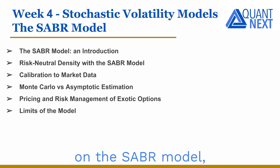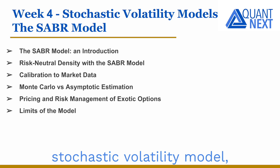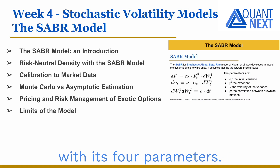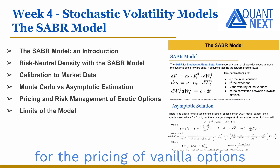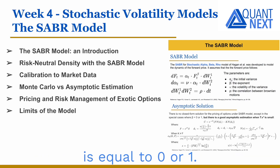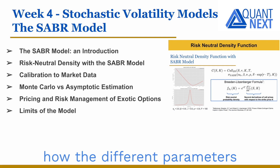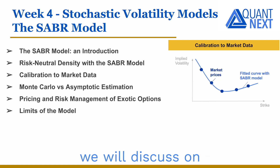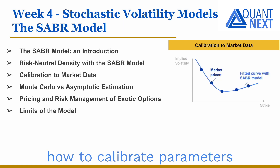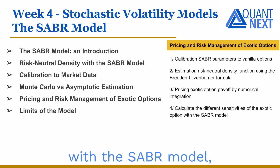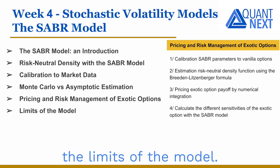The fourth week will be on the SABR model, another popular stochastic volatility model particularly on interest rates. We will introduce the model with its four parameters. There is no closed form solution for the pricing of vanilla options under the SABR model, except when the parameter beta is equal to zero or one, but there is a good asymptotic estimation. We will see how the different parameters impact the moments of the return distribution and the implied volatility curve, how to calibrate parameters to market prices, how to price and risk manage exotic option payoffs with the SABR model, and we will finally discuss the limits of the model.